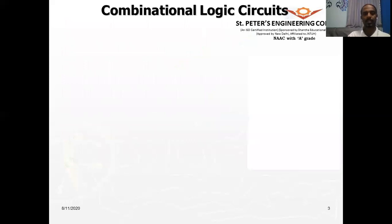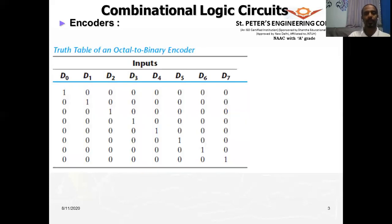As mentioned in the previous session, a decoder takes n inputs and converts them into m outputs where m = 2^n. For example, with 2 inputs, 2^2 = 4 outputs. Similarly, an encoder does the reverse: it takes m inputs and gives n outputs where m = 2^n or less than 2^n. That is what an encoder does.